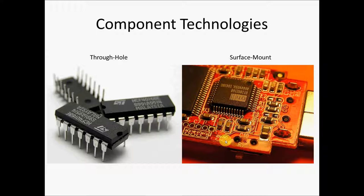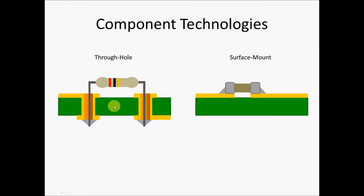There are a couple of component technologies we're going to use. One is through-hole — the older technology, mostly available for prototyping, and what we use on a breadboard. Through-hole components actually poke through the surface of the board. Surface mount technologies just sit on top. Through-hole legs go through the hole and we solder on the opposite side. Surface mount sits directly on top and soldering is done in the same place. Surface mount is much cheaper and more dense, but way harder to do by hand. We're going to focus on through-hole technologies in this skills module.